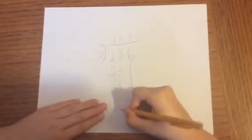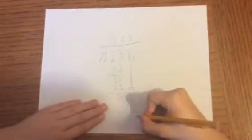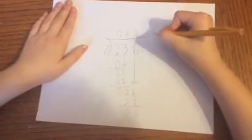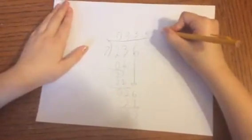Subtract and you get 5, so that's the remainder. You can put R5 or you can put 5/7.